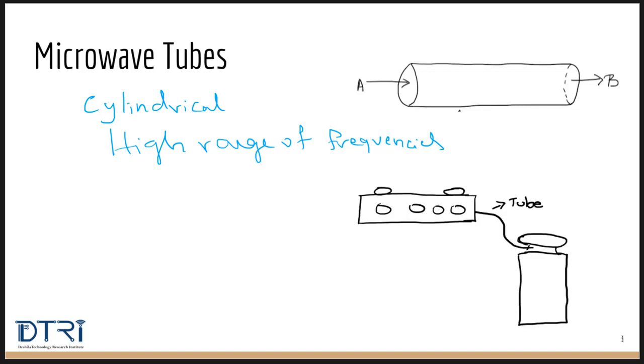So when we combine the two words microwave and tubes, it refers to a long or short tube which can transfer energy or electrons at microwave frequency range from one point to another.